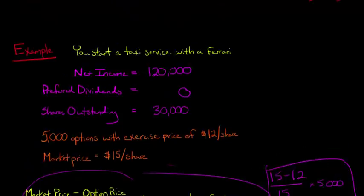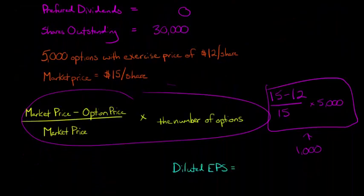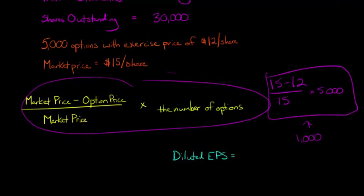So what does that mean? Well, if we return to our equation here, that means that we're going to add 1,000 to the denominator. We're not going to do anything to the numerator, it's not necessary. So we're going to add 1,000 to the denominator, so now let's calculate what the diluted earnings per share would be.